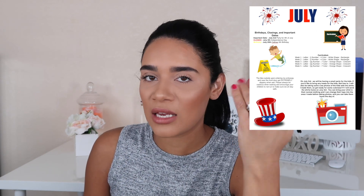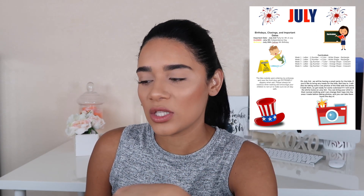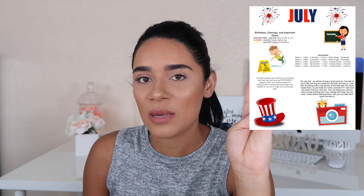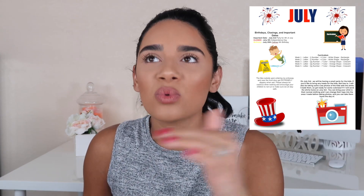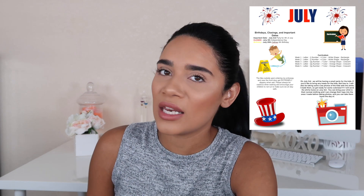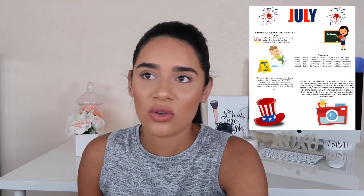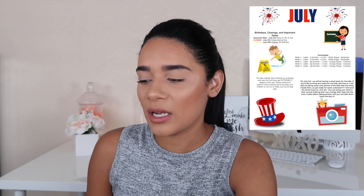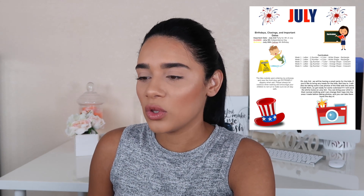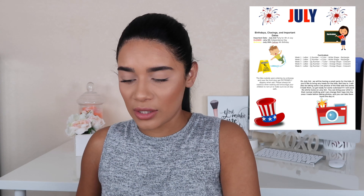I always keep that section towards the top of the page, and then I include my curriculum. July is a five-week month for me and I have the curriculum for each week. I always pick a letter, number, color, and shape of the week. Sometimes I do it for the month — it really depends on how quickly I want to move through things, or if it's a busy or slow month.